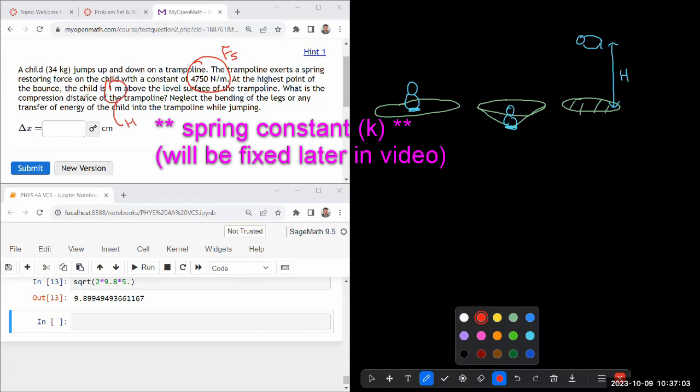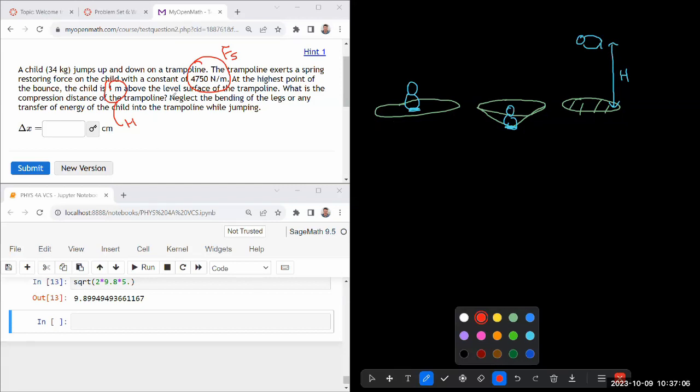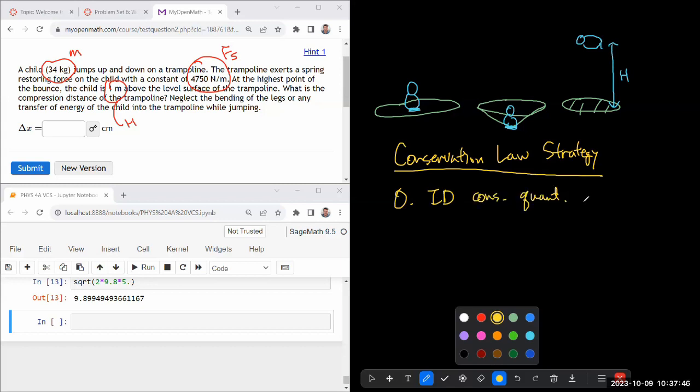What is the compression distance of the trampoline? I guess it is an energy question. So we have the mass of the child. Let me treat this like a conservation law strategy problem. The very first step or even step number zero is you should identify conserved quantity. And for the time being, it will be super simple. The only quantity that could possibly be conserved right now is energy.